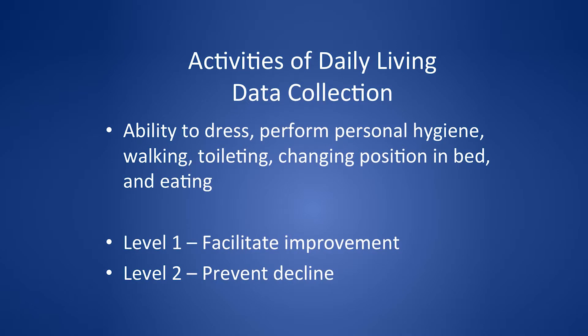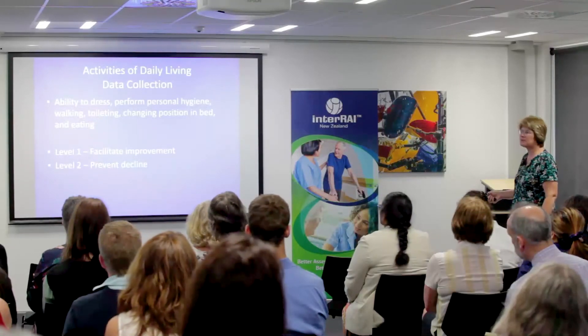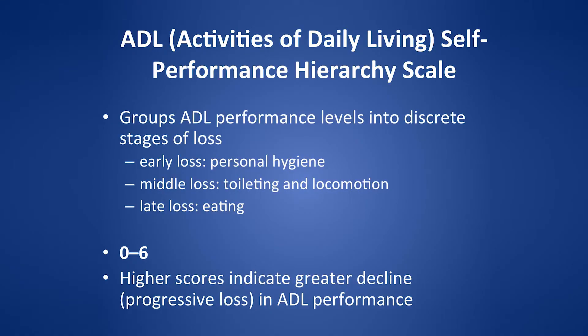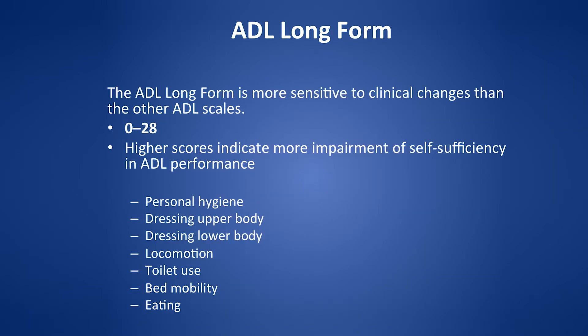Activities of daily living covers ability to dress, perform personal hygiene, walk, and toileting. A lot of what we want to do is prevent decline, not necessarily facilitate improvement — people in residential aged care have advanced frailty, and their dementia or organ failure will often get worse, so we're trying to make sure they don't decline. There are a couple of ADL scales: the hierarchy scale is zero to six, and the long form is zero to 28, which includes personal hygiene, dressing upper and lower body, locomotion, toilet use, and bed mobility.